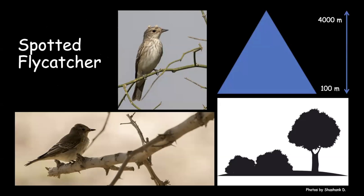I want to start with the spotted flycatcher, a bird we may get to see next month or two. Some might be present by end of August. Spotted flycatchers pass through northwest India only during August and September as a passage migrant.